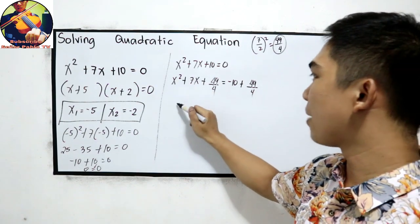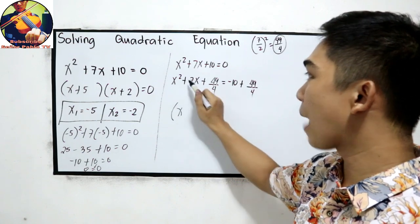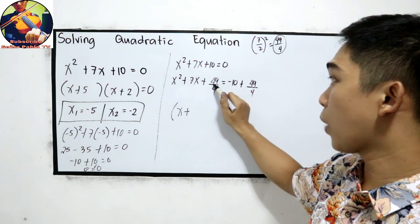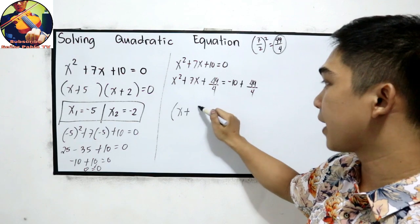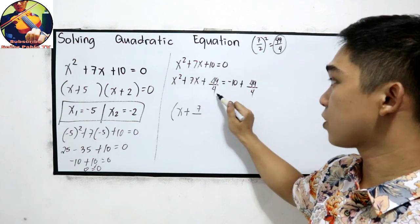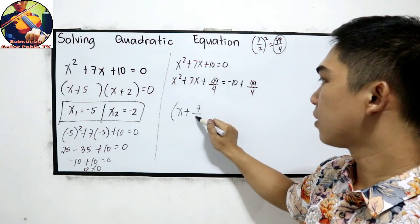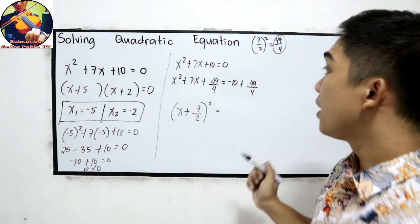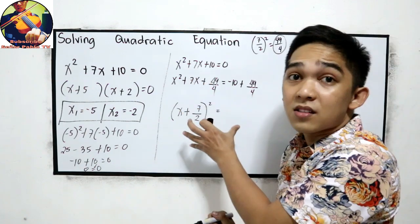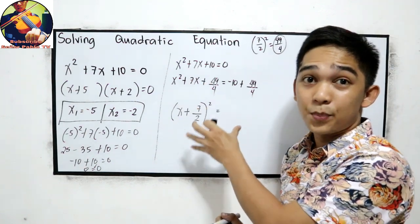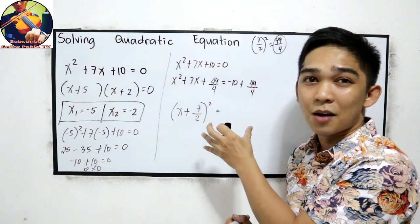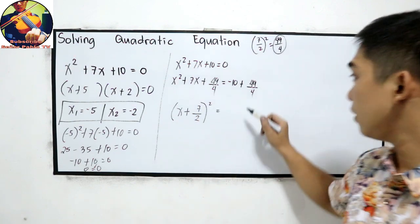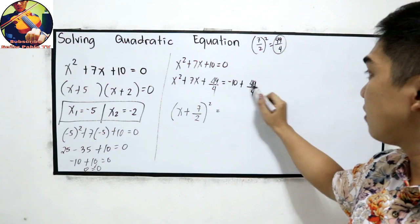The left side becomes x plus — copying the sign of the middle term — plus square root of 49, which is 7, over square root of 4, which is 2, all squared. If you want to master copying the sign of the middle term, please watch lesson number 4. Then simplify.